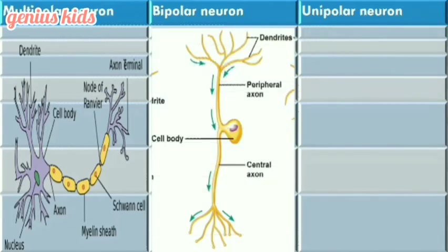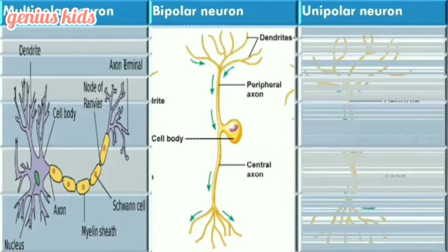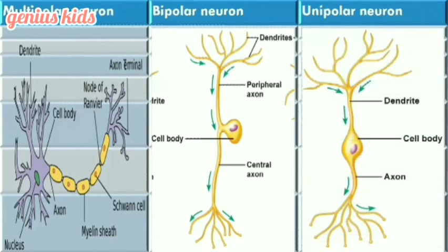The bipolar neuron has a specific neck for the cell body. Finally, you can observe the dendrite and axon of the unipolar neuron on the same line.